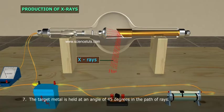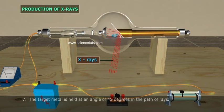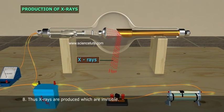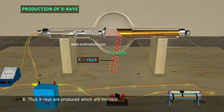The target metal is held at an angle of 45 degrees in the path of rays. Thus, X-rays are produced which are invisible.